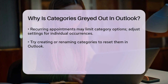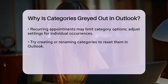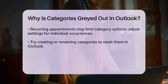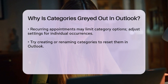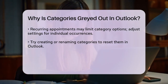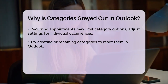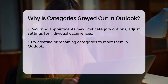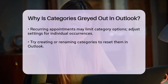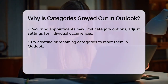Additionally, if you're using recurring appointments or events, there might be limitations. The Categorize button can be grayed out when you're opening a recurring item, so you might need to adjust the category settings for each individual occurrence rather than the entire series.